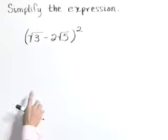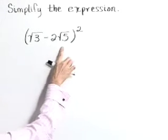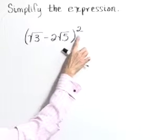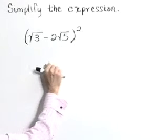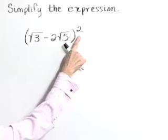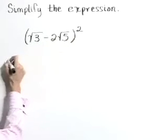Simplify the expression (√3 - 2√5)². I'm going to treat this as a binomial squared. This is a minus sign in the middle.